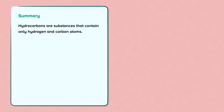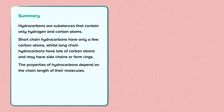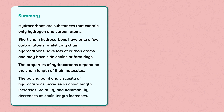Hydrocarbons are substances that contain only hydrogen and carbon atoms. Short chain hydrocarbons have only a few carbon atoms, whilst long chain hydrocarbons have lots of carbon atoms and may have side chains or form rings. The properties of hydrocarbons depend on the chain length of their molecules. The boiling point and viscosity of hydrocarbons increase as chain length increases. Volatility and flammability decrease as chain length increases.